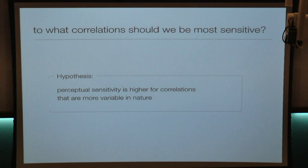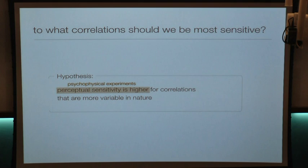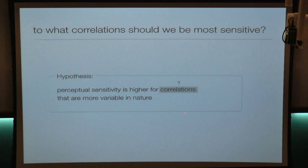Testing this involves two very different sets of analyses. On one hand, we want to characterize perceptual sensitivity — for this we've been collaborating with Jonathan Victor and Mary Conti at Weill Cornell Medical College, who do psychophysical experiments to measure human visual sensitivity. The other piece is characterizing the variability of structure found in the natural visual world — for this we analyze structure in natural images. Before we can go further in testing this, we have to agree on a definition of what we mean by correlations.